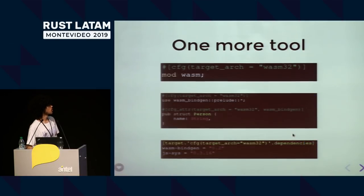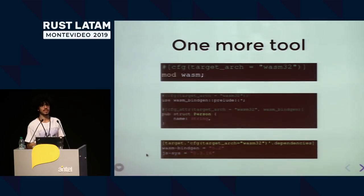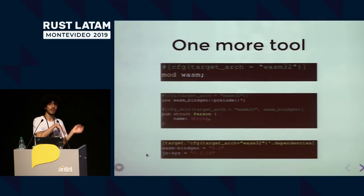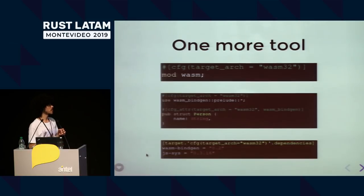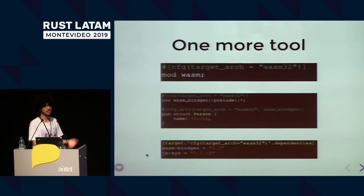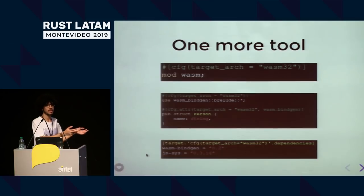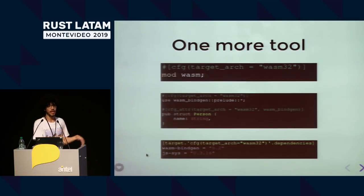In `Cargo.toml`, there's WasmBindgen and `js-sys`. `js-sys` is a library inside WasmBindgen that has a lot of JavaScript types — functions, `Uint8Array`, and many other things.